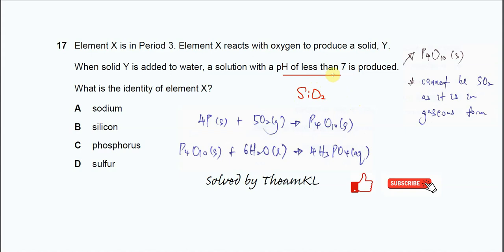There are two oxides that will give solutions with pH less than 7. They are phosphorus oxide and sulfur dioxide. It must be phosphorus oxide because phosphorus oxide, P4O10, is in solid form. Sulfur dioxide is in gaseous form, and this question says solid Y is produced. So it's going to be phosphorus.